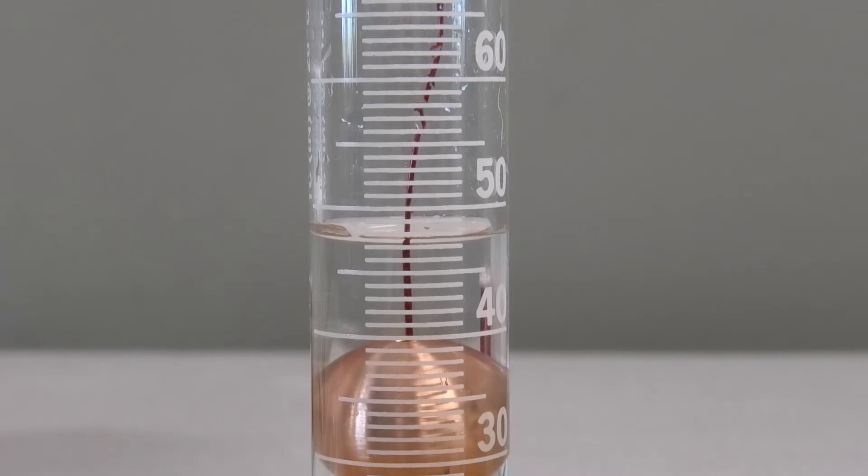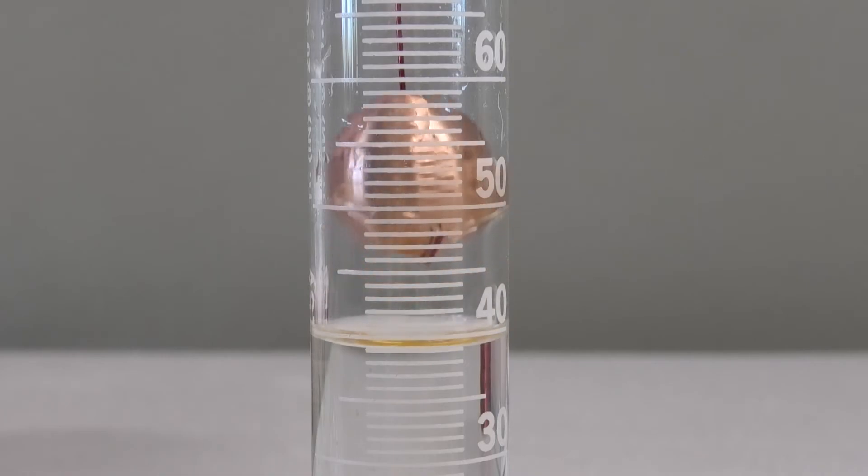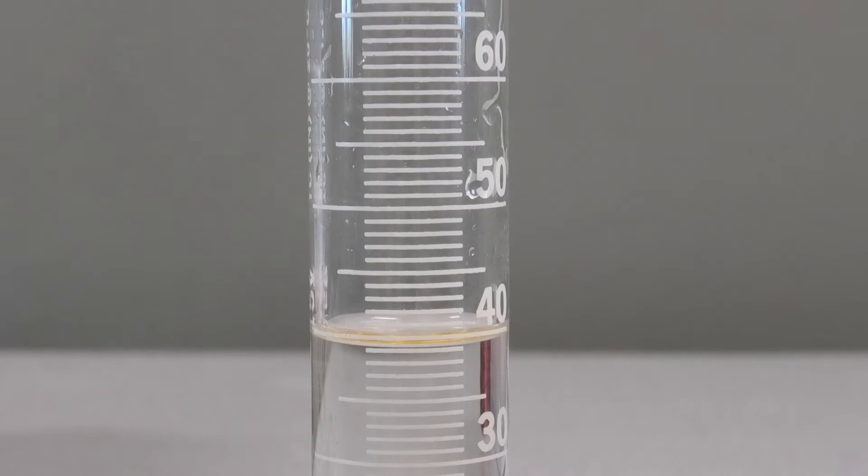Record these two numbers and pull it back out. Then there we have it. From there, we can calculate the density by just taking the mass of the materials and dividing it by the volume of the materials. Which means that in order to get this finished, we're going to need the masses of each and every single one of these.